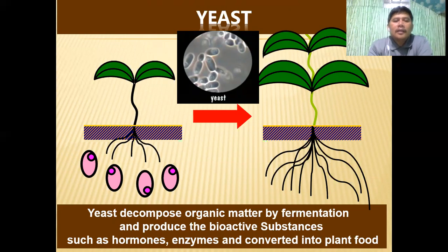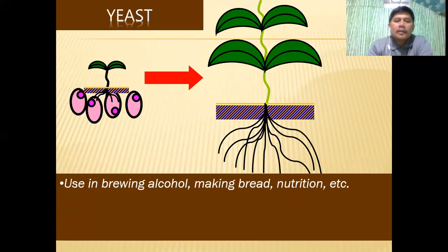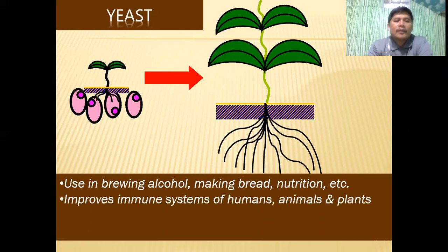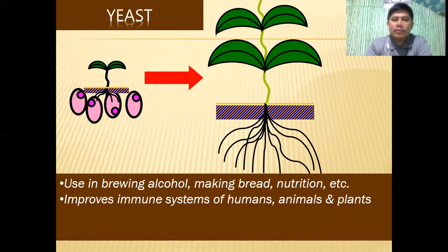Yeast, on the other hand, decomposes organic matter by fermentation and produces bioactive substances such as hormones and enzymes, converting them into plant food. That's why yeast is very essential in the growth of our plants. Yeast is also used in brewing alcohol, making bread, and for nutrition. It also improves the immune systems of humans, animals, and plants.